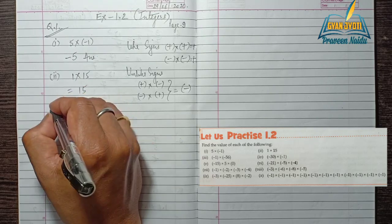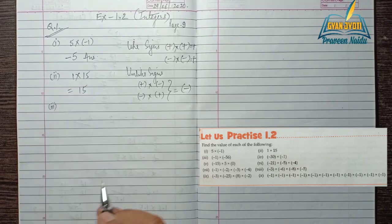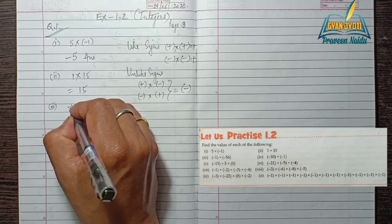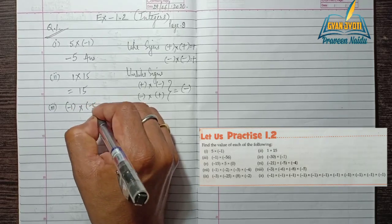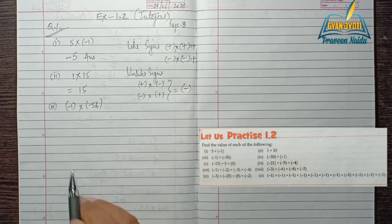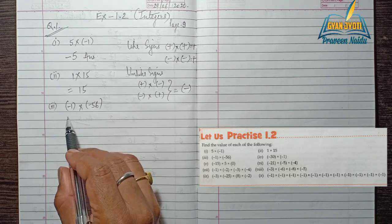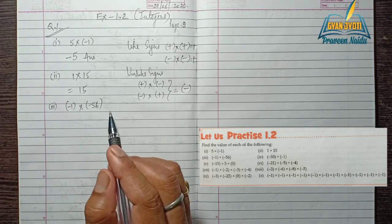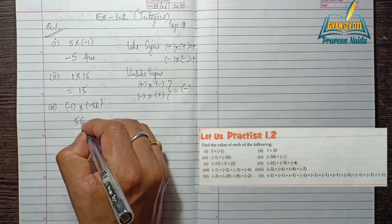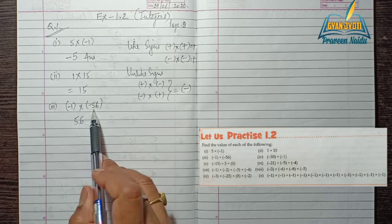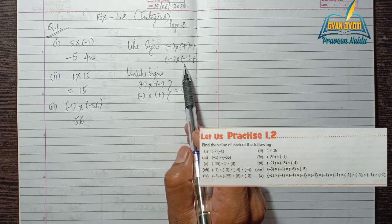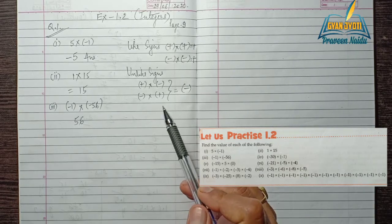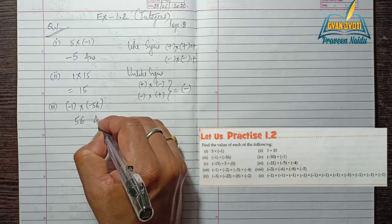Third one: minus 1 into minus 56. In this case both the integers are negative. When we multiply 1 and 56 the product is 56. Since both are negative, and when we multiply two negative signs the result of the product is positive, so our answer is positive 56.